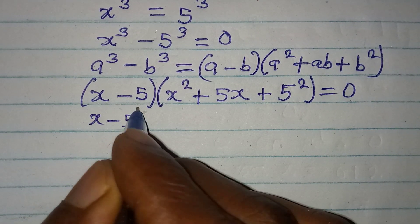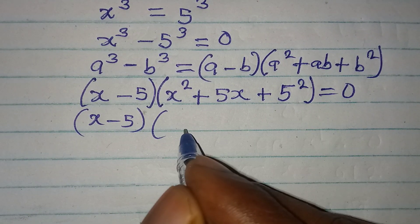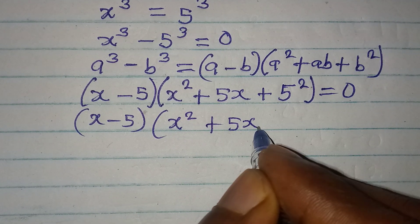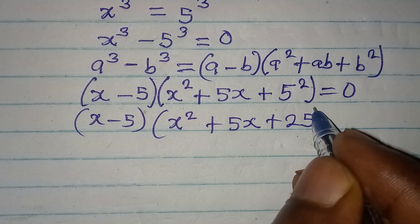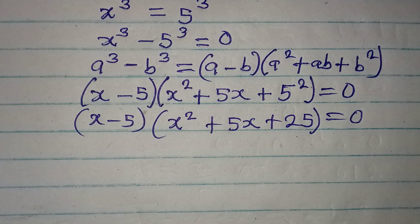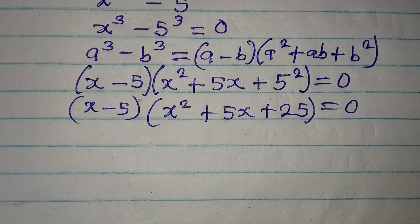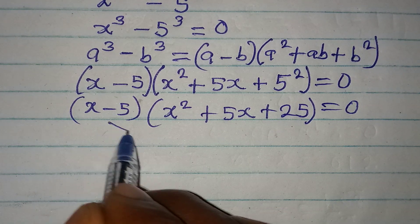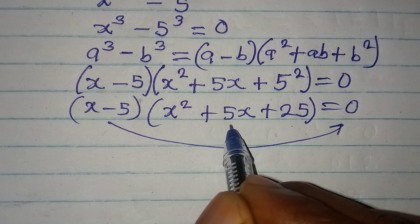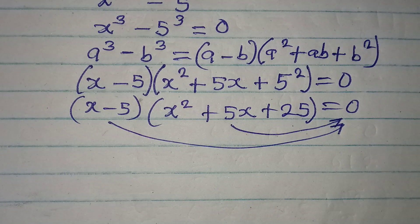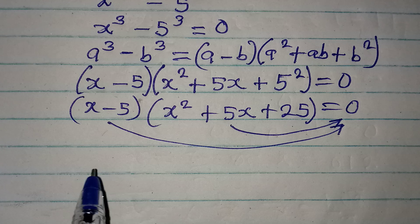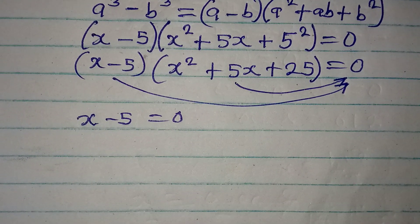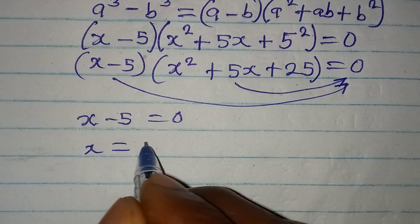So we have x minus 5, and in the other bracket we have x squared plus 5x plus 25 equals zero. Now from here we apply our zero product rule. So we can say it is either x minus 5 is equal to zero, or the other bracket is equal to zero.